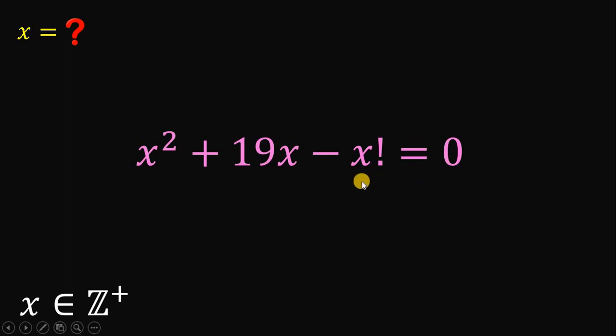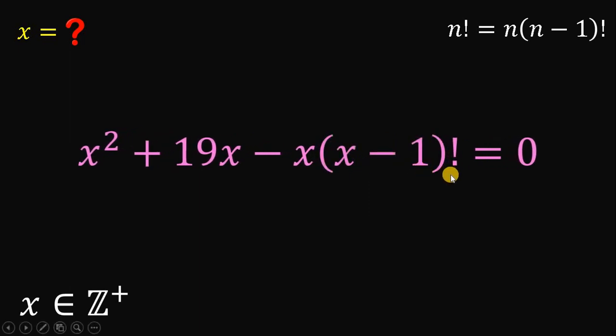First thing to do is to take note that n factorial is equivalent to n times n minus 1 factorial. So we will use this identity to answer this question. Therefore, x factorial can be written as x multiplied by x minus 1 factorial. Now, why do we do that?